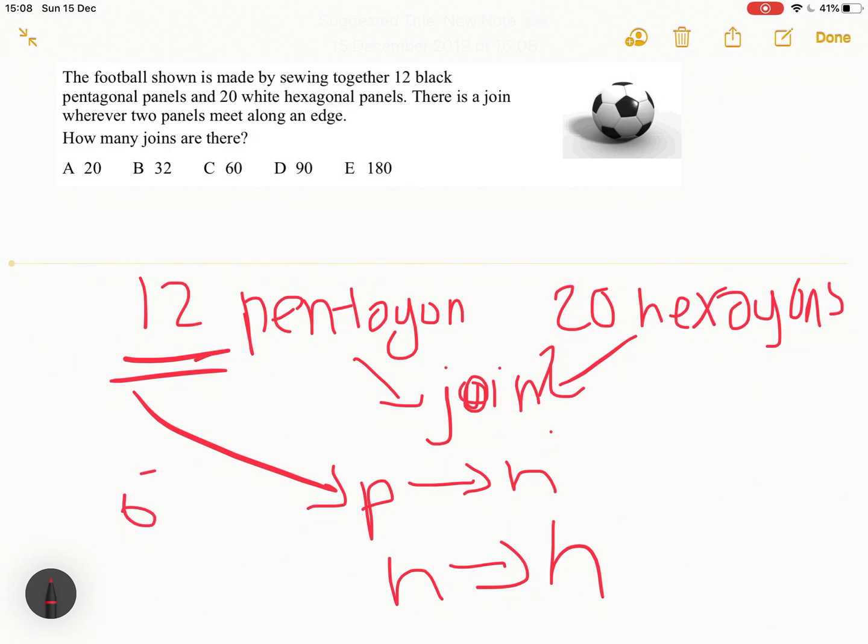So you have, which is 60, so 12 times 5 which is 60. So that's how many joins there are with the pentagon and the hexagon.